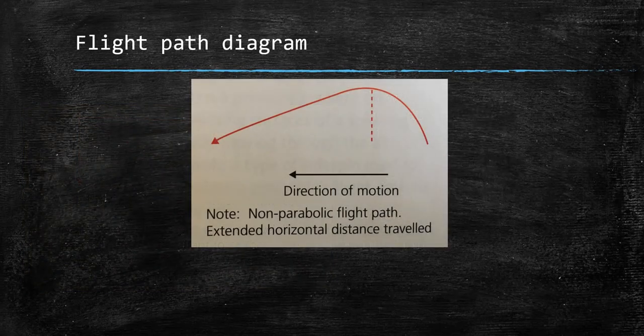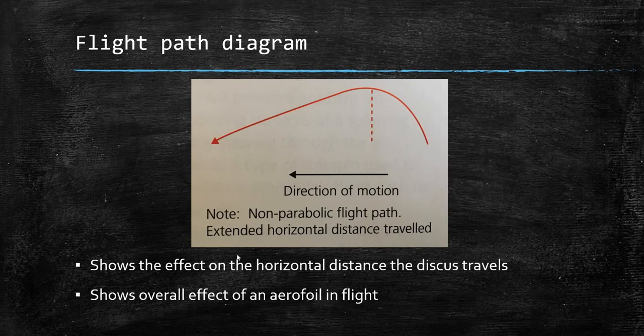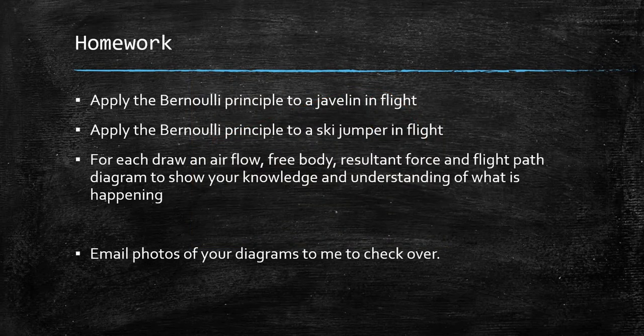The final diagram is a flight path diagram. Note you have a non-parabolic flight path and extended horizontal distance travelled because of the lift — it shows the overall effect of an aerofoil in flight, with the peak of the parabolic flight marked. I'd like you to pause this video and apply the Bernoulli principle to a javelin in flight and a ski jumper in flight. For each example, draw an airflow, a free body, a resultant force, and a flight path diagram. Email your photos of the diagrams to me to check over, then restart this video.